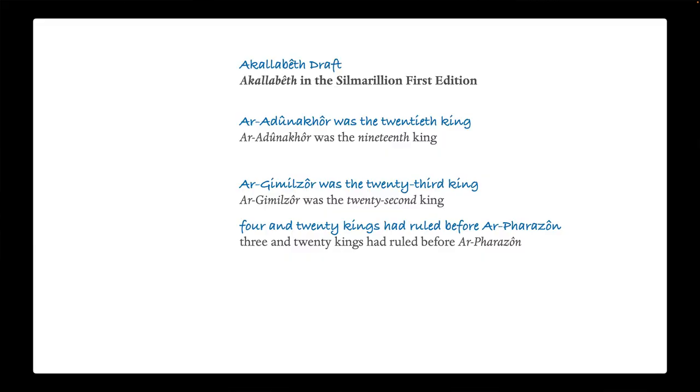But in Unfinished Tales, Christopher Tolkien admits that in the draft of the Akallabêth his father actually gave different numbers. The draft says that Ar-Adunakhor was the 20th king, not the 19th, and that 24 kings had ruled before Ar-Pharazôn. In preparing the Silmarillion, Christopher assumed that this was in error, and that the kings list in Lord of the Rings was the true numbering, and so made the adjustment accordingly in the Akallabêth.